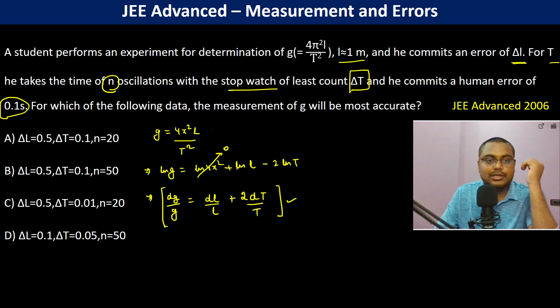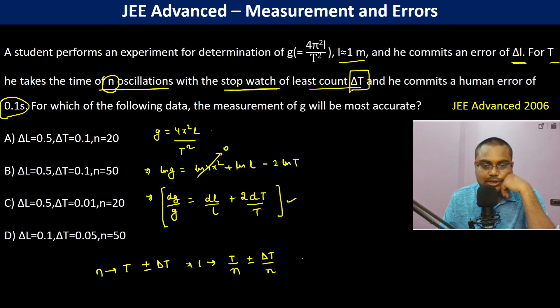For n oscillations it is T plus minus delta T. So therefore for one oscillation it is going to be T by N plus minus delta T by N. So dT becomes delta T by N and T becomes T by N. Therefore both are going to cancel each other.